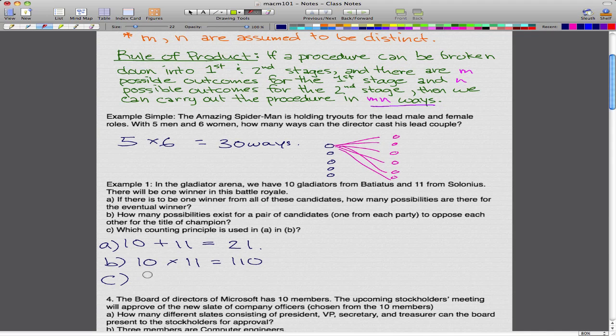Part C: Which counting principle is used in A and in B? In A, the rule of sum. And in B, the rule of product.